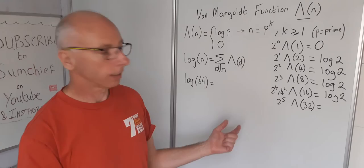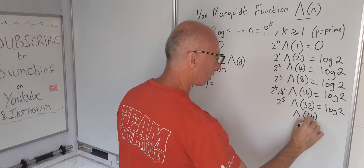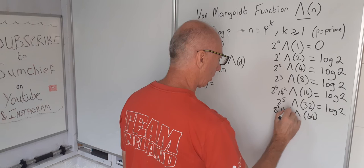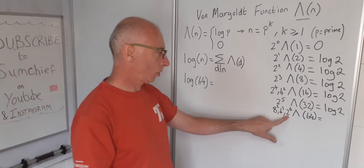And then the last but not least, 64. So 64 is 8 squared, 4 cubed, or 2 to the power of 6. So 8 is no good for us because that's not a prime number, neither is the 4, so therefore we use 2. p is 2, k is 6, log of p, log of 2.